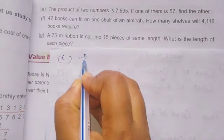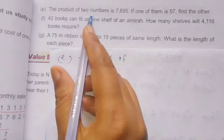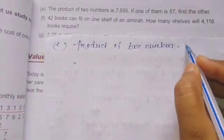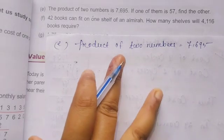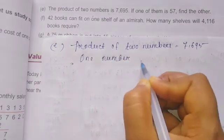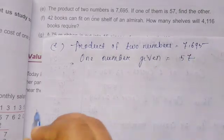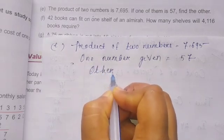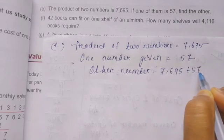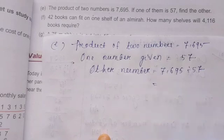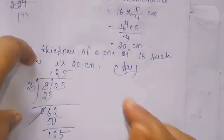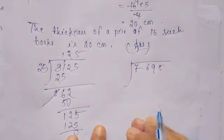First we write: Product of two numbers equals 7,695. One number given equals 57. Other number equals 7,695 divided by 57. Now we divide this number: 7,695 divided by 57.